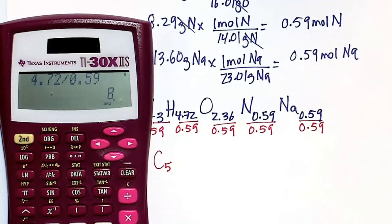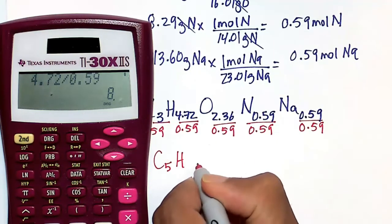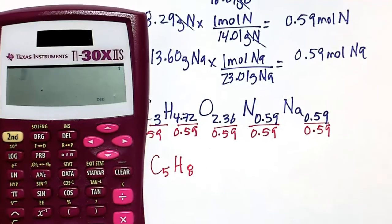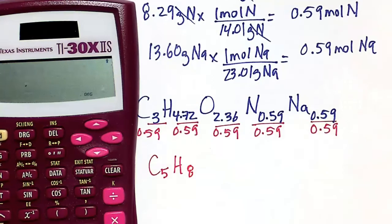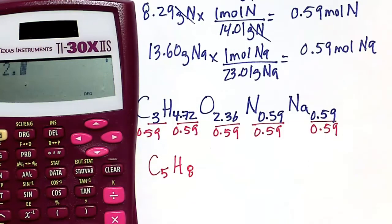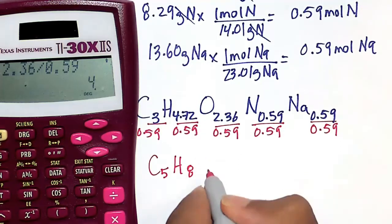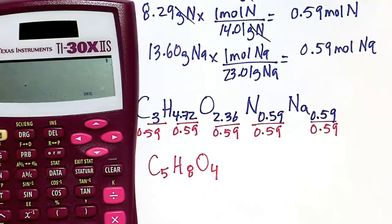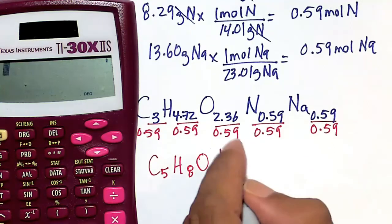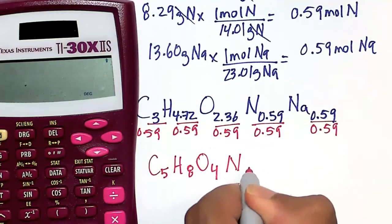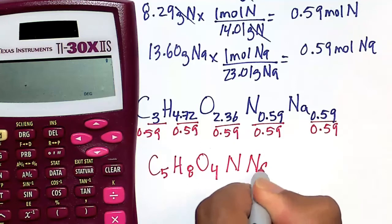2.36 divided by 0.59, that's a perfect 4. Very good. Yeah, 0.59 divided by 0.59 is 1, and then sodium is there.